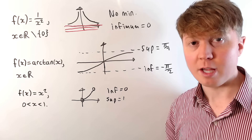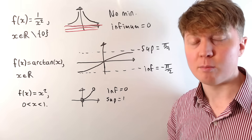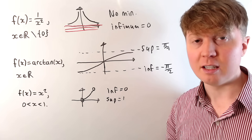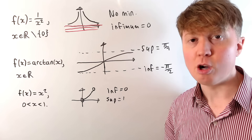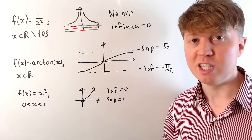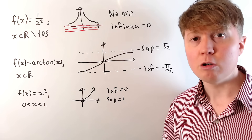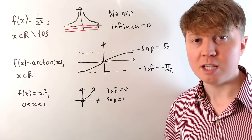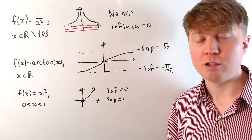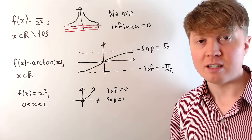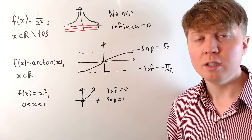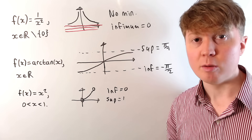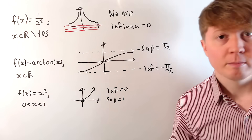So like with y = x², the minimum and the infimum — the biggest possible lower bound — would just be 0. Whereas with y = -x², you could have a maximum, and that's the same as the supremum, but there's no minimum in that case.